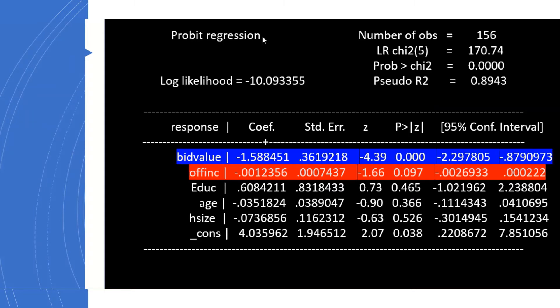This is the model output I obtained using the data. Let's see whether the result matched with expectation, at least with theory. The bid value, you can see, is negative and significant at one percent, so it's good. It's consistent with theory that we already discussed.